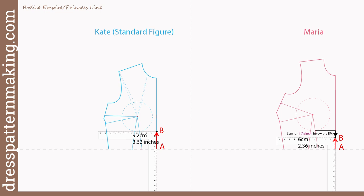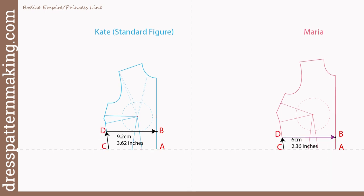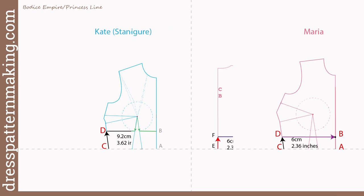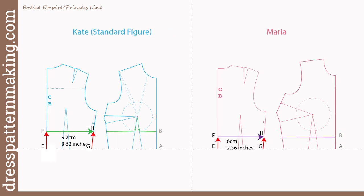For Kate, from point A to point B — waistline to empire line — is 9.2 cm (3.62 inches). For me that line is three centimeters below my bust mound, so from waist to that point is 6 cm (2.36 inches). Using that same measurement, measure up at the side seam from point C at the waist and mark point D, then draw a straight line from D to B at the center front.